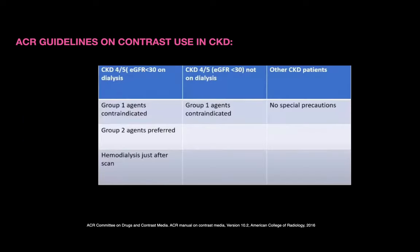ACR guidelines on contrast use in CKD patients: In CKD Stage 4-5 patients with eGFR less than 30 who are on dialysis, Group 1 agents are contraindicated; Group 2 agents are preferable, and hemodialysis after contrast administration is necessary. In CKD Stage 4-5 patients with eGFR less than 30 who are not on dialysis, Group 1 contrast agents are also contraindicated. In other CKD categories there are no specific precautions.